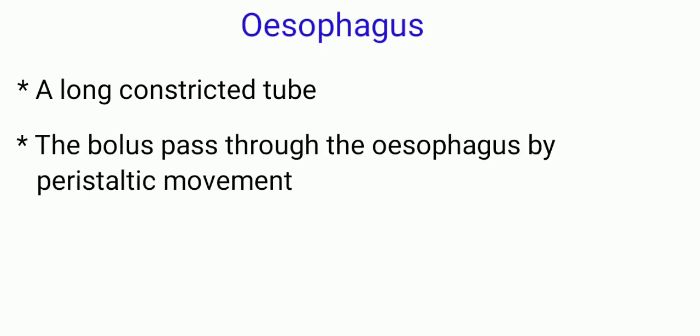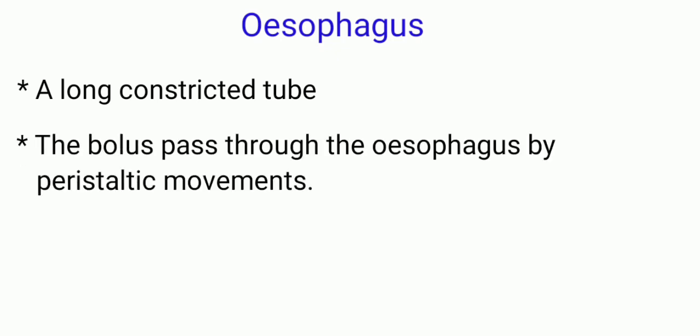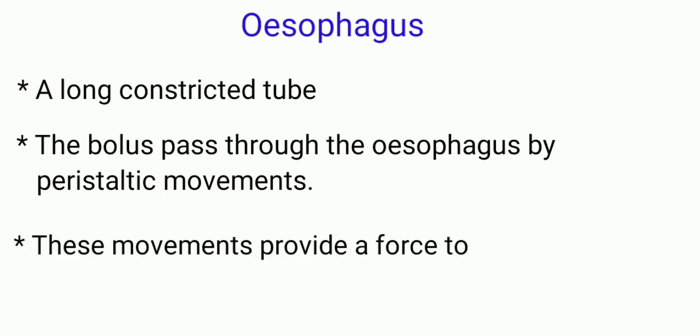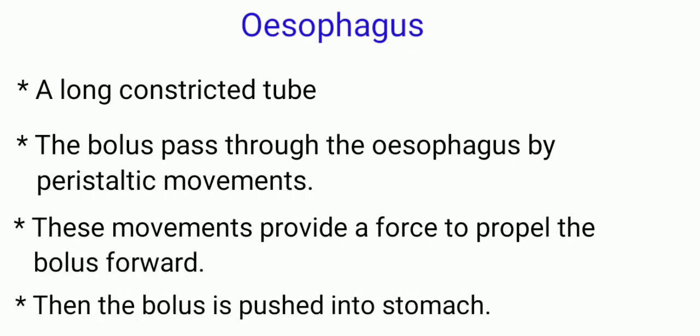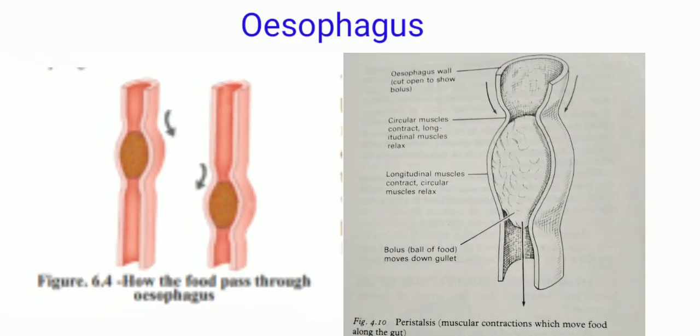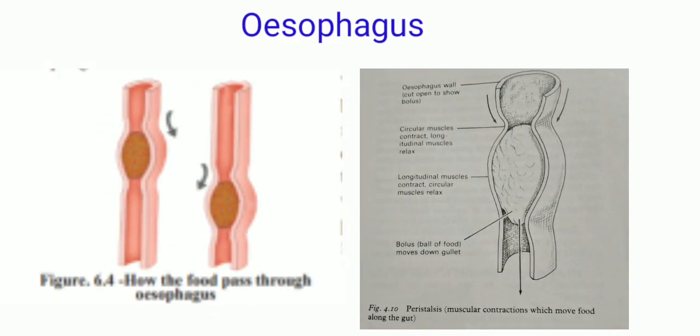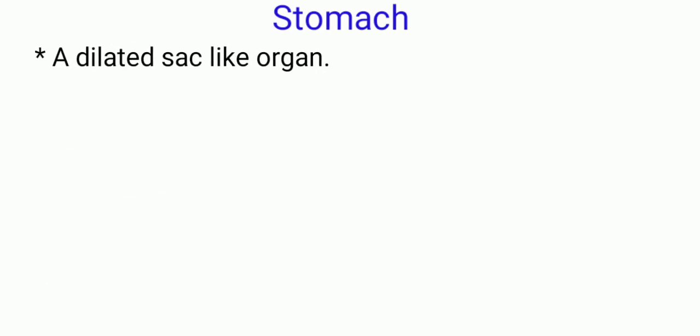The esophagus is a long constricted tube that connects the buccal cavity to the stomach. The bolus passes through the esophagus by wave-like muscular contractions known as peristalsis. The muscles in the esophagus wall contract immediately behind the bolus, pushing it towards the stomach. Digestion does not occur in this tube. By these movements, the bolus is pushed into the stomach.